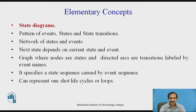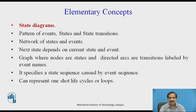The next concept is a state diagram, which is a pattern of events, states, and state transitions. All these are placed in a network of states and events. The next state depends on the concurrent state and the event. A graph can be drawn where the nodes are states and directed arcs are transitions labelled by each event name. It specifies the state sequence caused by the event sequence and can represent one short life cycle or a loop. These state diagrams are also called state transition diagrams.